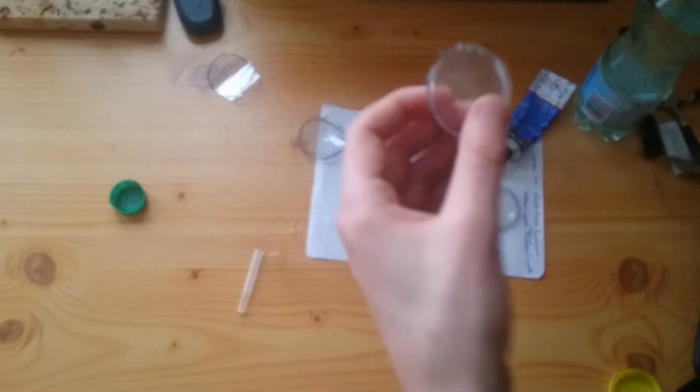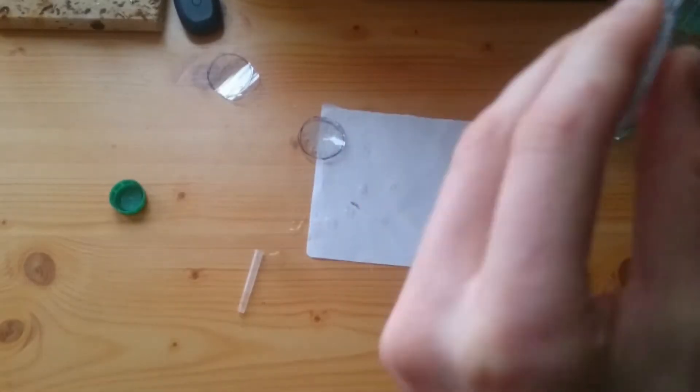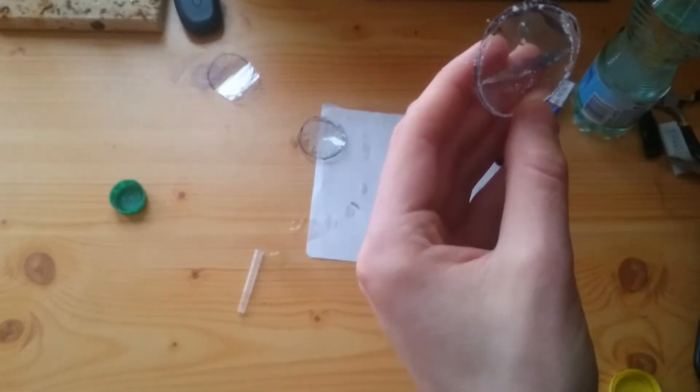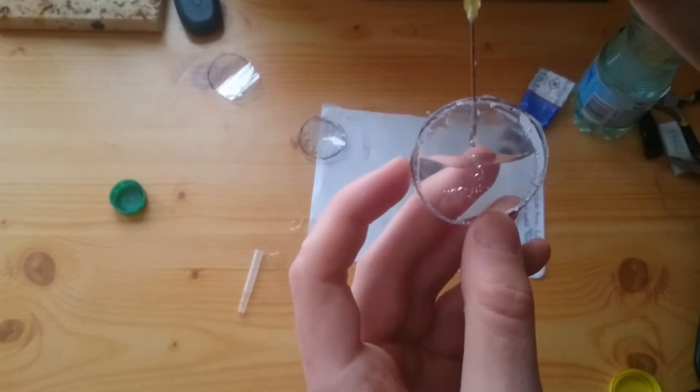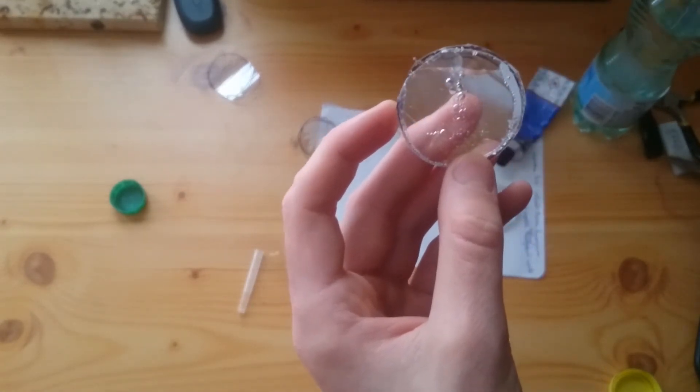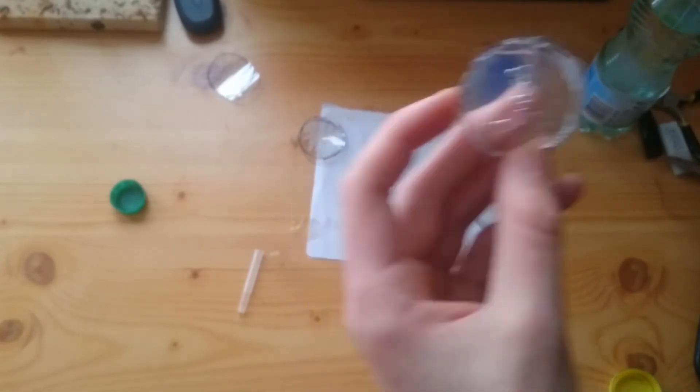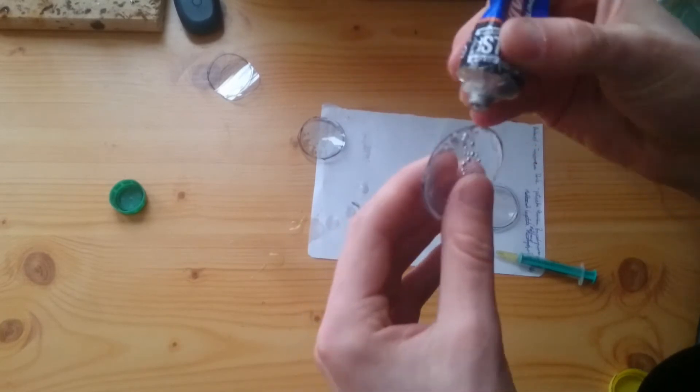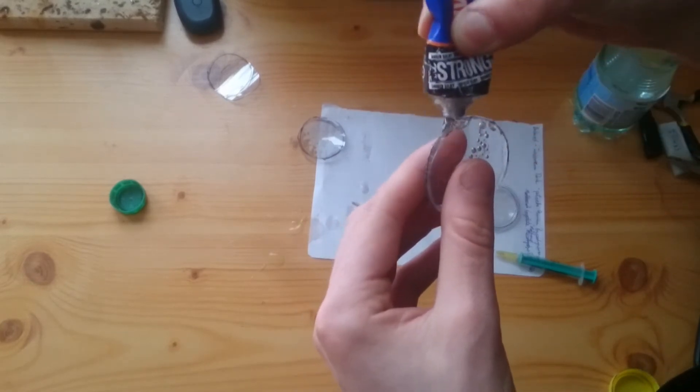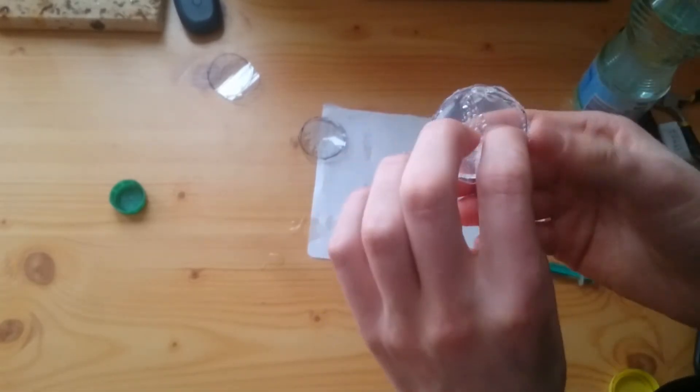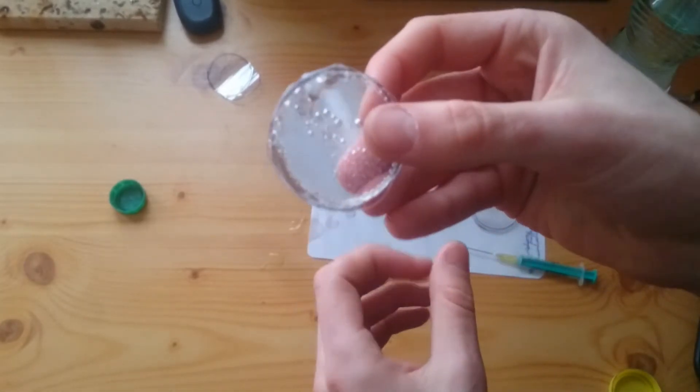So as you can see, I just stuck the needle between the layers and slowly start to pour water in. Then I sealed the hole with a healthy amount of glue and let it dry for another few hours. You can also gently tap it a few times to get those bubbles out.